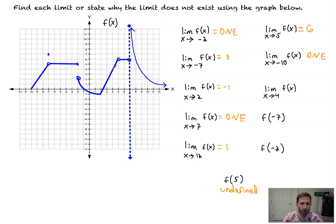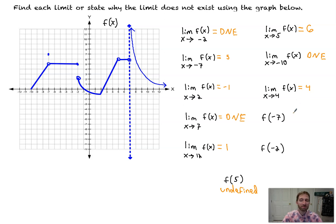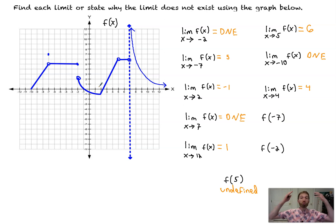The limit as x approaches 4 of f(x): as we approach from the left side we approach a y value of 4, and from the right side we approach the same y value of 4, therefore the limit is equal to 4.